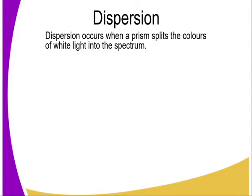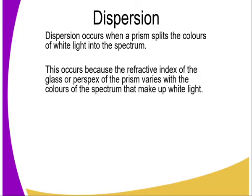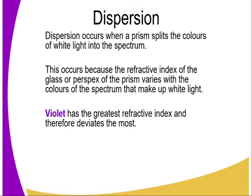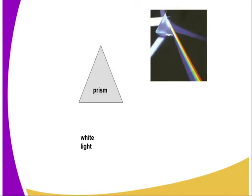So dispersion. Dispersion occurs when a prism spreads the colors of white light into the spectrum. This occurs because the refractive index of the glass or perspex of the prism varies with the colors of the spectrum that make up the white light. Violet has the greatest refractive index and therefore deviates the most. Red has the lowest and deviates the least.